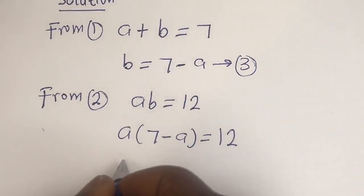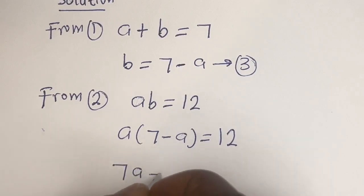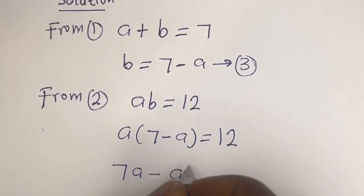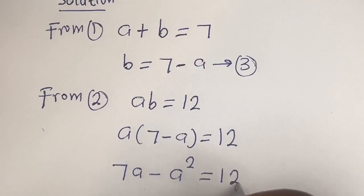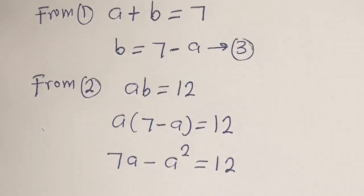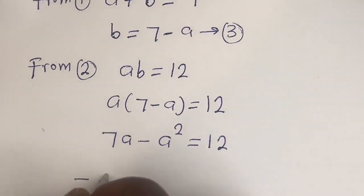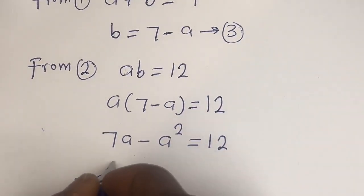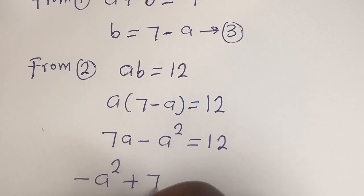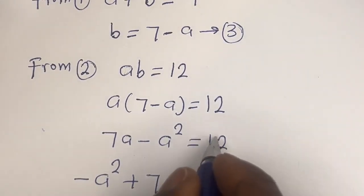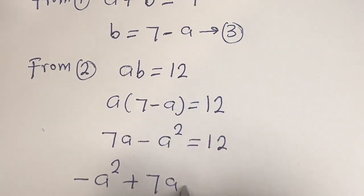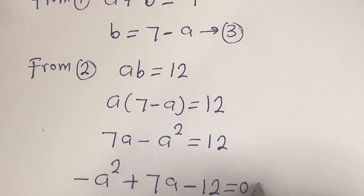Expanding: a multiplied by 7 gives 7a, minus a multiplied by a gives a squared, so 7a minus a squared is equal to 12. Rearranging: minus a squared plus 7a minus 12 is equal to 0.